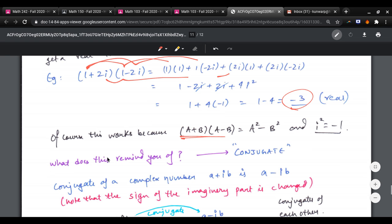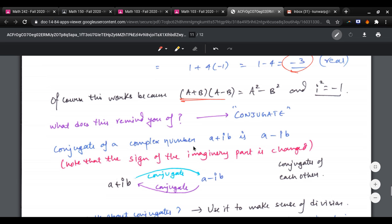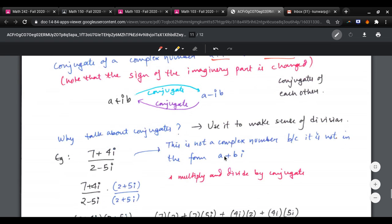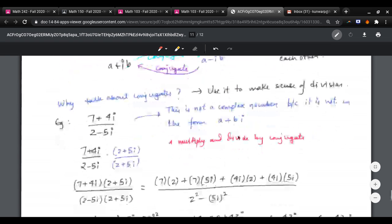Now, we have the same definition here. Conjugate of a complex number a plus ib is a minus ib. What you do here is you necessarily change the sign of the imaginary part. So, the conjugate of a plus ib is a minus ib. And the conjugate of a minus ib is a plus ib. Now, why talk about conjugate? Because we can use it to make sense of division.